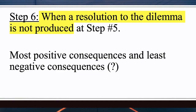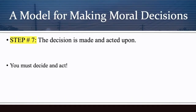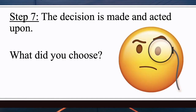Step six: when a resolution is not produced in step five, consider the most positive consequences and least negative consequences. This is a decision you would have to make — I can't make that decision for you. I've walked you through these steps, but you are the one who has to decide. In this case, what is the option with the most positive consequence and the least negative consequence?